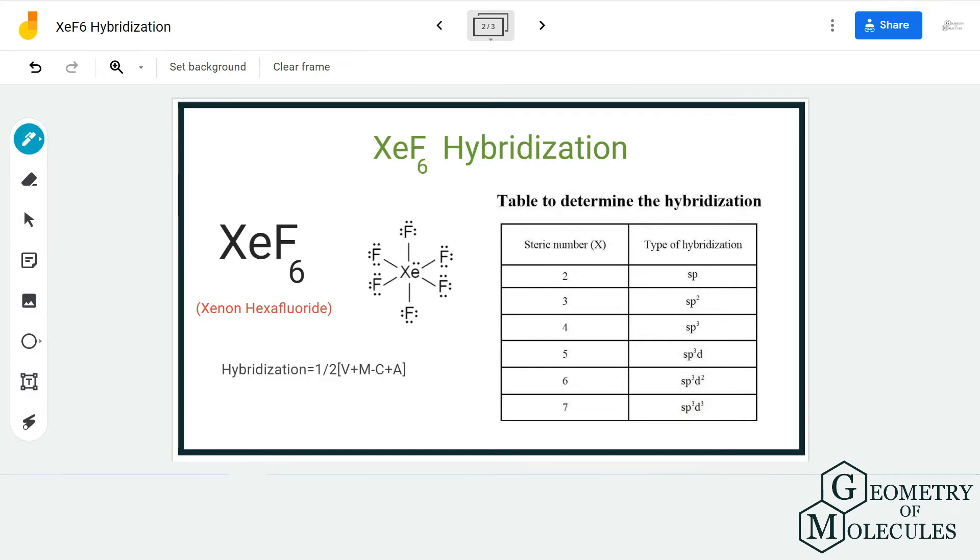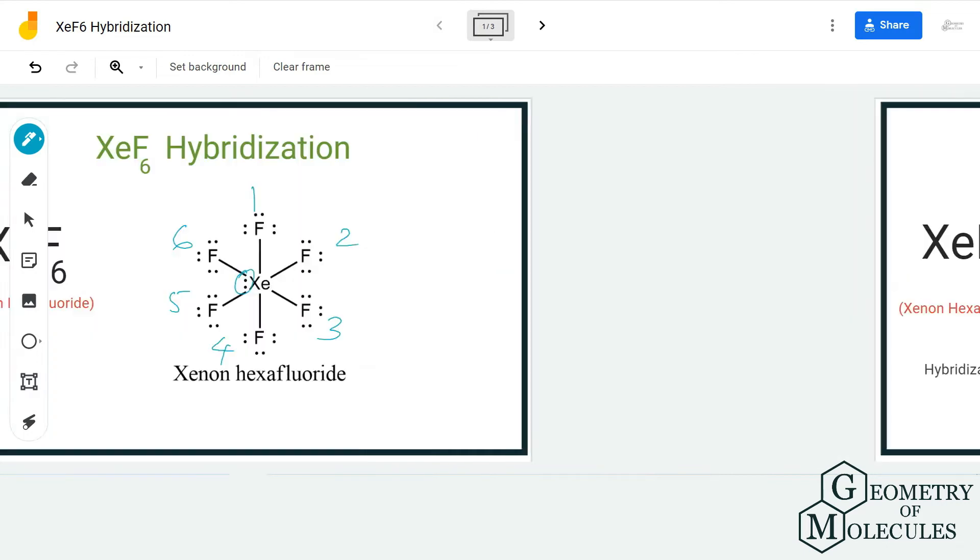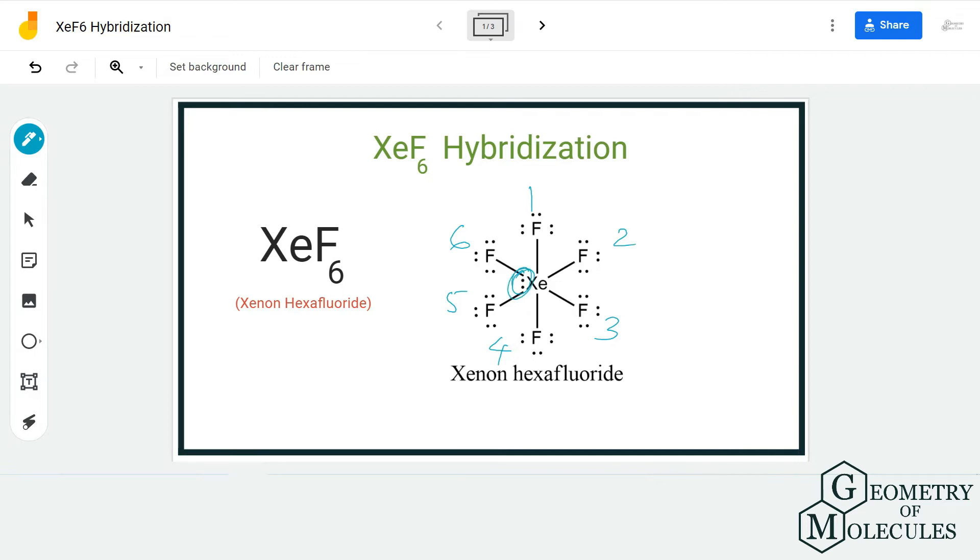Here xenon has seven electron regions if you count. There are six bonding pairs of electrons and there is this one lone pair or non-bonding pair of electrons, so in total there are seven electron regions around this atom.